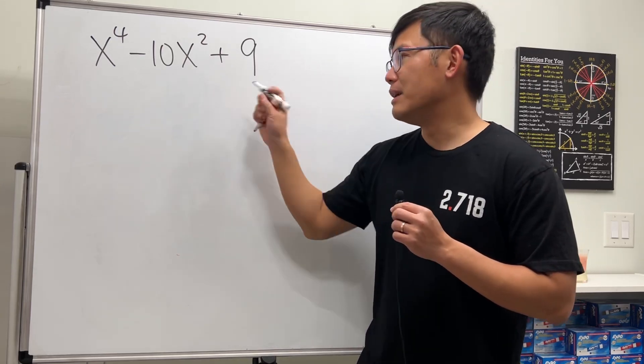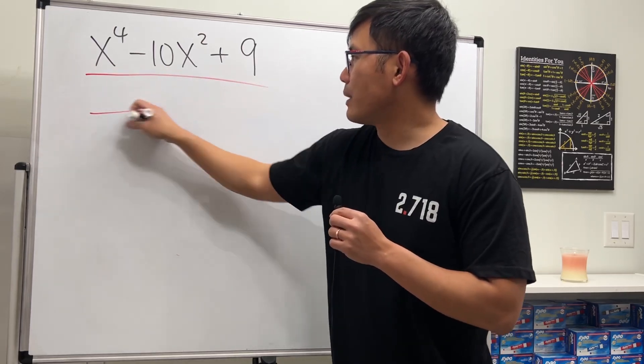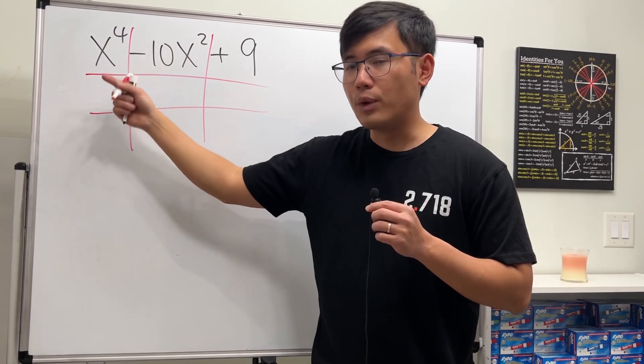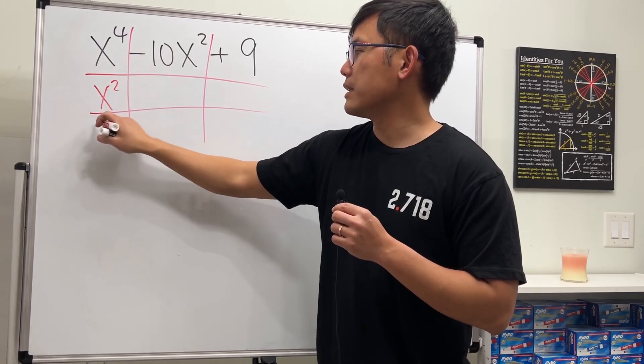Let me show you. We draw the tic-tac-toe boxes like this, and then we have to think about what times what will give us x to the fourth power. Let's use x squared times x squared.